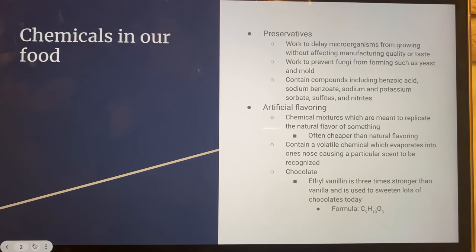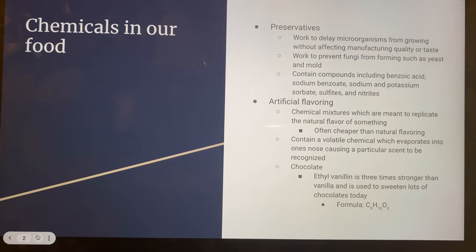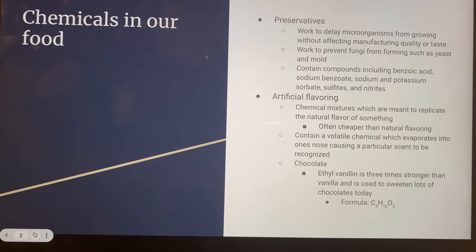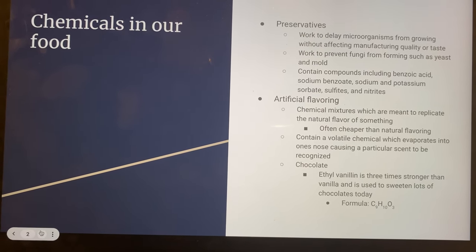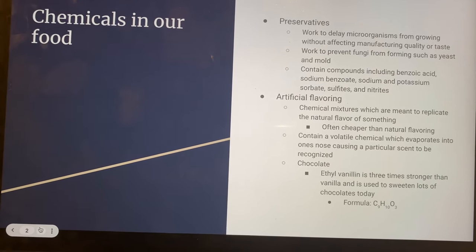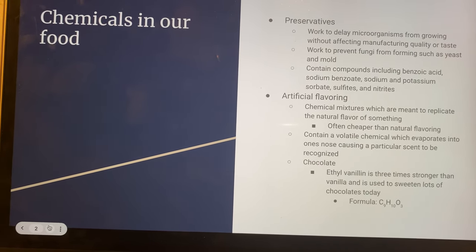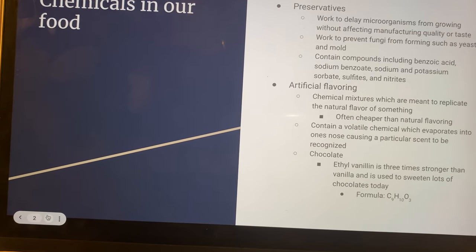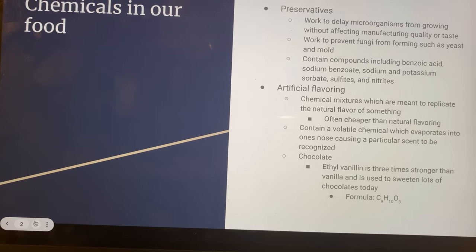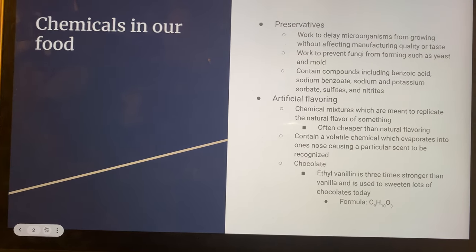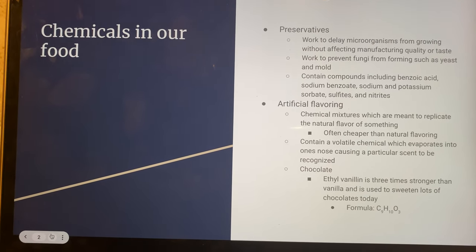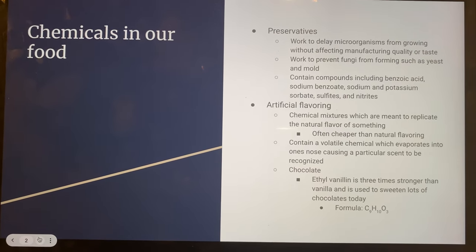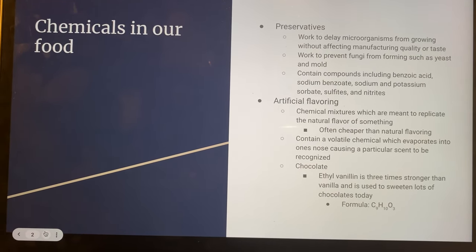Next, artificial flavoring. Artificial flavoring is a chemical mixture which is meant to replicate the natural flavoring of something. It is often cheaper and easier to get than the natural flavoring, but it can cause health problems. It contains a volatile chemical which evaporates into one's nose causing a scent to be recognized. For example, chocolate often will use artificial flavoring. This will be called ethanol vanillin, and it is three times sweeter than vanilla, and the formula is C9H10O3.